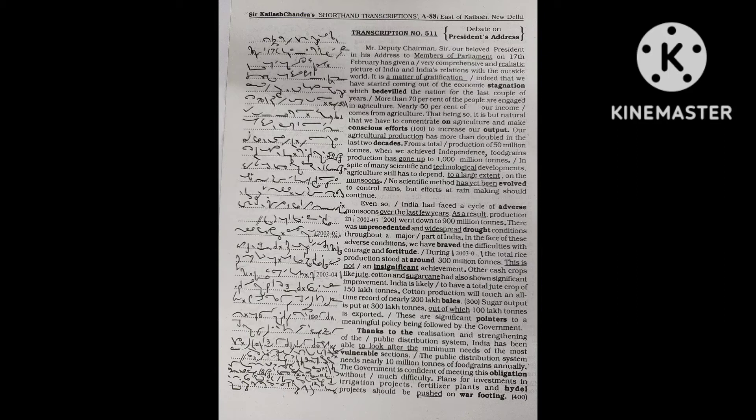In spite of many scientific and technological developments, agriculture still has to depend to a large extent on the monsoons. No scientific method has yet been evolved to control rains, but efforts at rainmaking should continue.